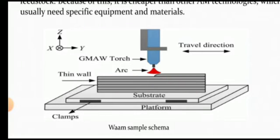This is the process of wire arc additive manufacturing where we are using the existing welding process to deposit the material. Those welding processes are well defined, and with their help we can deposit the material. First of all, we have to develop a CAD model. That CAD model is transferred to your robotic software, and based on that CAD model, the robot will generate its program for deposition of the material.